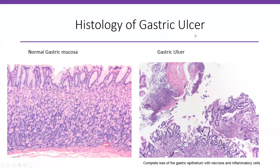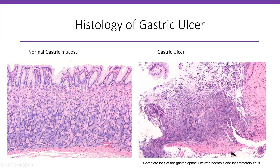For the histology of gastric ulcers: you can see multiple fragments of gastric mucosa with ulceration. There is a focal area of ulceration where the mucosa is completely gone. In the higher power picture, you can see the entire mucosa and epithelium are gone, replaced by necrosis and inflammatory cells.